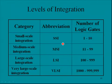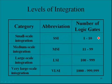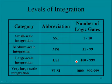The levels of integration in ICs include SSI (small-scale integration) with 1 to 10 gates, MSI (medium-scale) with 11 to 99 gates, LSI (large-scale) with 100 to 999 gates, and VLSI (very large-scale integration) with 1,000 to just under a million gates.